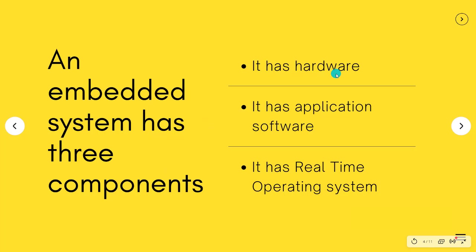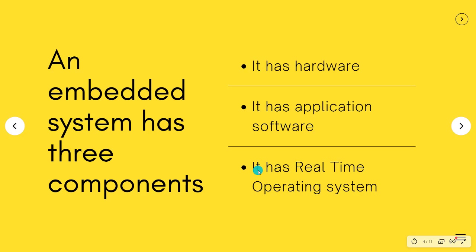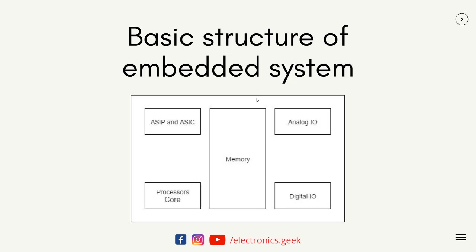The embedded system has three components. The first is hardware — basically the microcontroller or microprocessor. The second is software, which is required to run the hardware; for Arduino, that means C programming. The third is the real-time operating system — for example, in Arduino you can blink an LED while running other code simultaneously. The basic structure of an embedded system consists of memory, analog/digital input-output pins, a processor, code, and basic chips such as voltage control ICs.